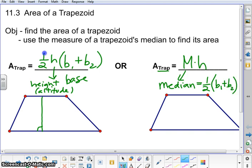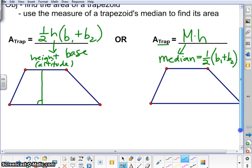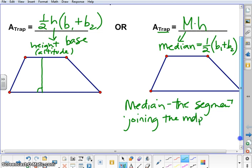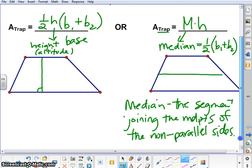So you can see the similarities between the two formulas. The formal definition of median is the segment joining the midpoints of the non-parallel sides. So in the picture, the median will be right there, creating midpoints or congruent parts on the left side and the right side.